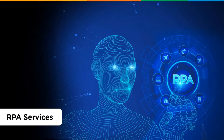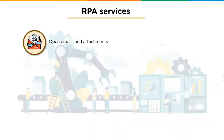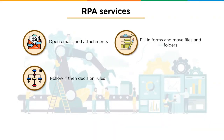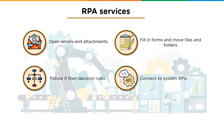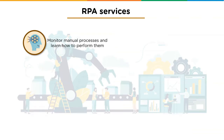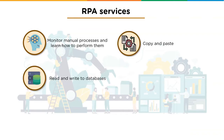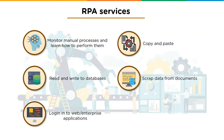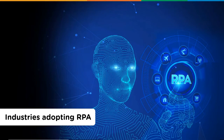RPA services generally include common business processes like opening emails and attachments, filling in forms, moving folders, following if-then rules, connecting to system APIs, extracting structured data from documents, making complex calculations, monitoring manual processes, applying machine learning, copying and pasting, reading and writing to databases, scraping data from documents, and logging into web or enterprise applications.